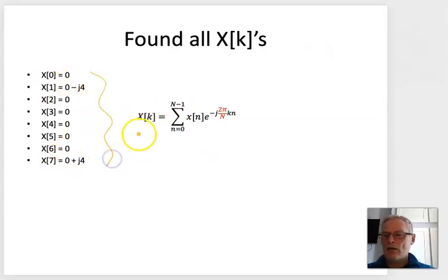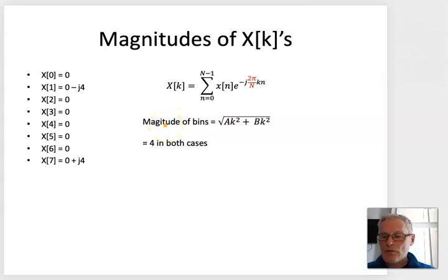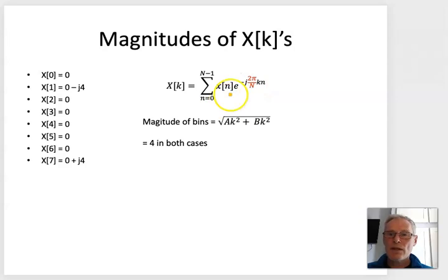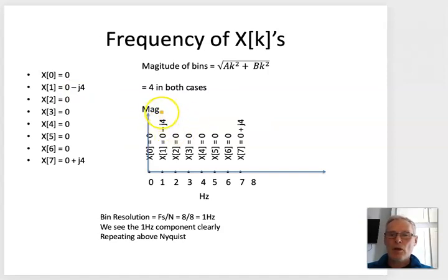This process continues until we evaluate all X(k) terms — these are our Fourier transform coefficients from the discrete equation. We can then find the magnitudes by taking the cosine and sine terms within the expressions. For example, √(0² + 4²) = 4 for one term and 4 for another, with zeros for all the others. Our bin resolution is sample rate divided by N: 8÷8 = 1 Hz per bin.